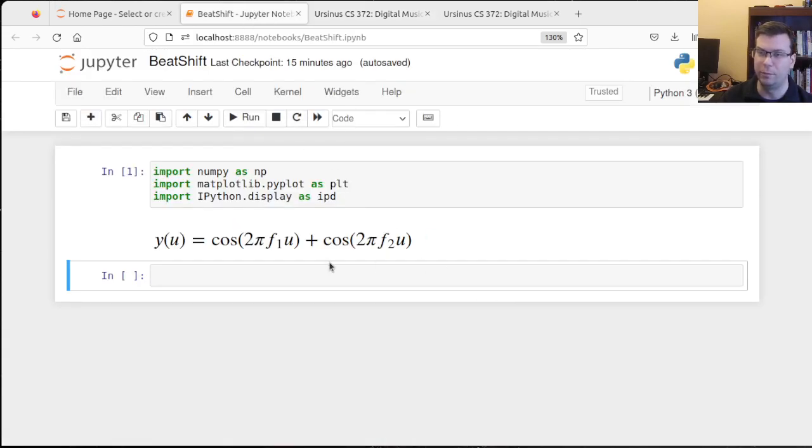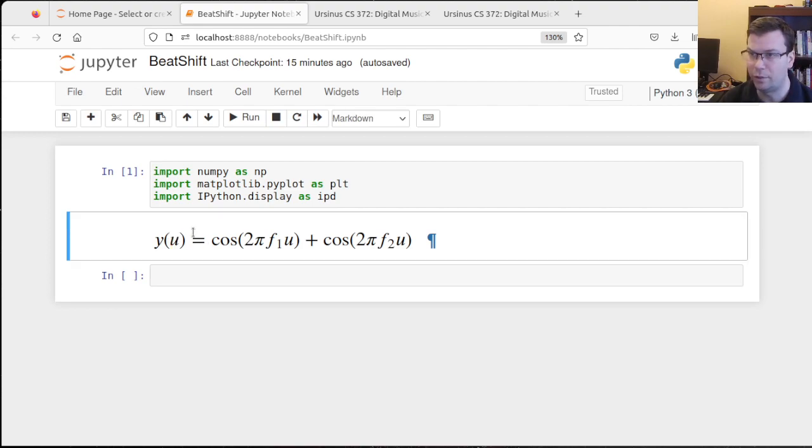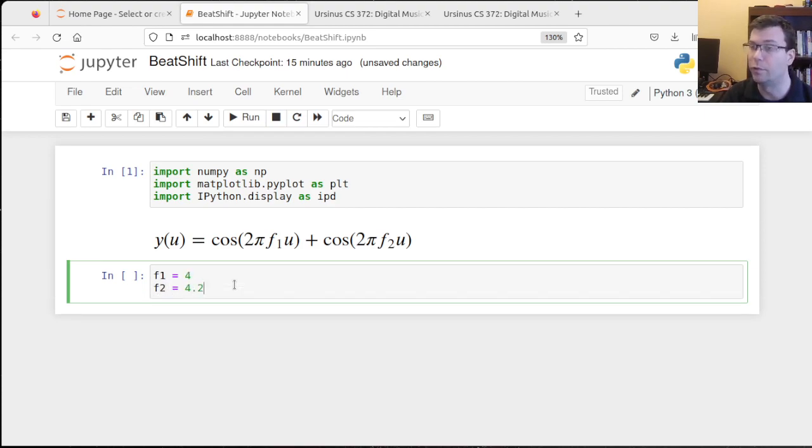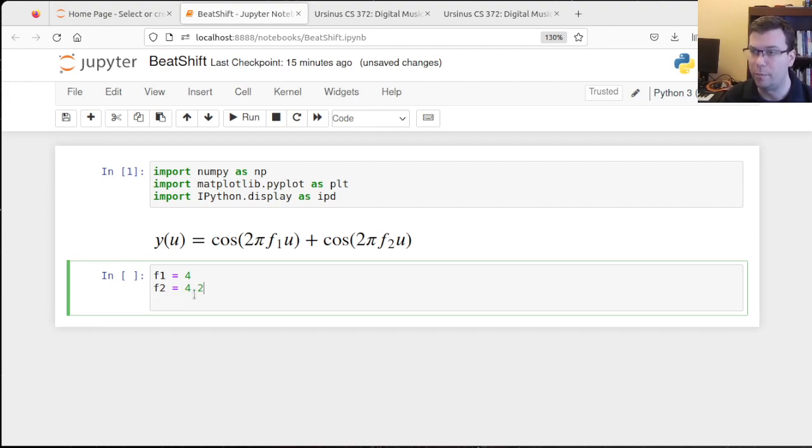And so that's what we're going to do for the beat as well. So here is our specific function for a beat frequency, or really just generally the superposition of two sinusoids, or two cosines here. And I'm going to keep u as the parameter just to avoid confusion because I want to actually treat time as fixed, but then show that we're going to shift this function. So maybe I'll go ahead and define my first frequency as 4 hertz, and my second frequency is maybe 4.2 hertz.